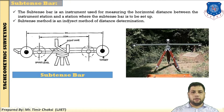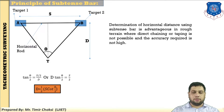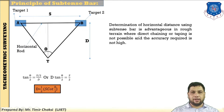First, substance bar. Students, sometimes the determination of horizontal distance using a tape or chain is not possible — sometimes field conditions and terrain conditions are very difficult. So you cannot directly find the horizontal distance using the chain or tape. Determination of horizontal distance using substance bar is advantageous in rough terrain where direct chaining or taping is not possible and high accuracy is not required.